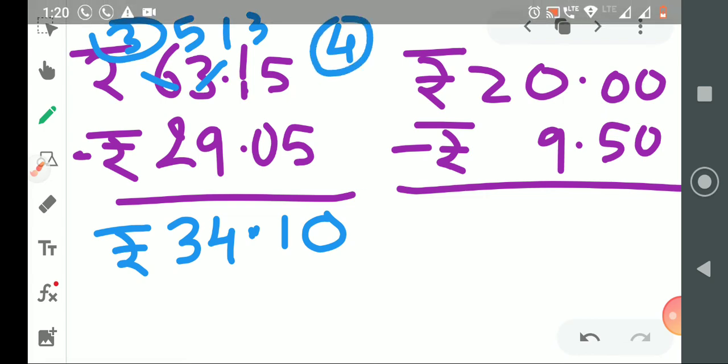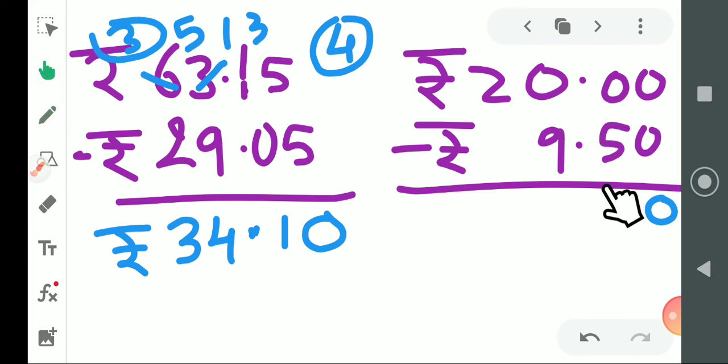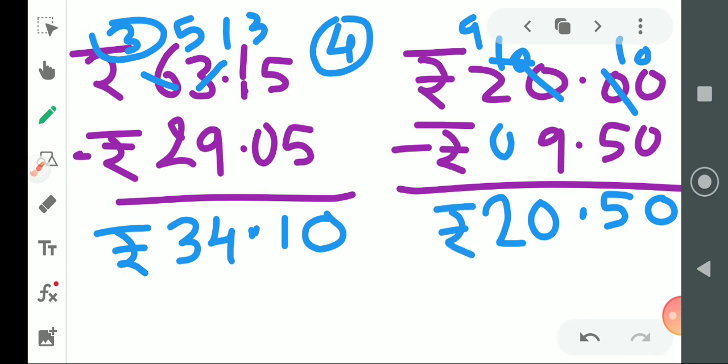Now the fourth example. ₹20.00 minus ₹9.50. 0 minus 0 is 0. 0 minus 5 is not possible. We make this 10. Then 10 minus 5 is 5. Then point. Cut this to make 10, and cut this to make 9. 9 minus 9 is 0. 2 minus 0 is 2. Final answer is ₹20.50.